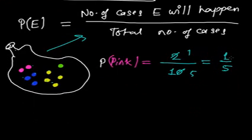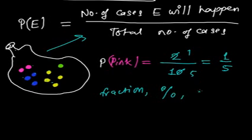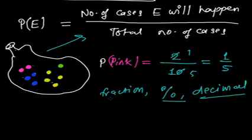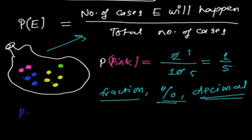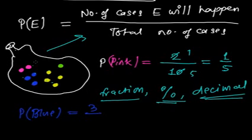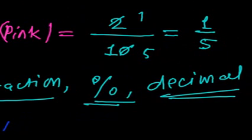So 1/5 is the probability of pink. Probability can be represented as a fraction, percentage, or decimal. If somebody asks the probability of blue marbles: there are 3 blue marbles out of 10 total, so the probability is 3/10. And if somebody asks for the probability of yellow marbles: there are 4 yellow marbles out of 10, so the probability of getting yellow marbles is 4/10.